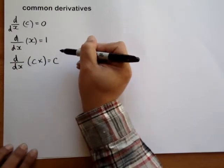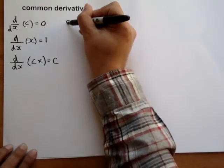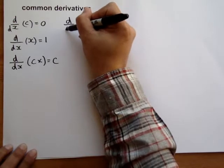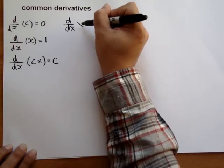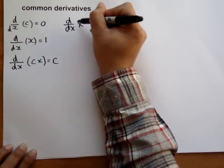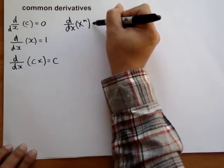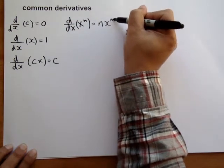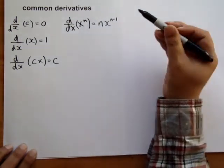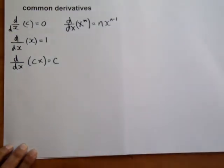The derivative of x to the n is nx to the n minus 1. This is a very important derivative.